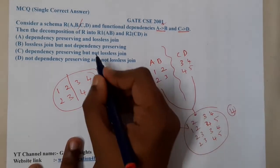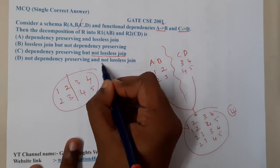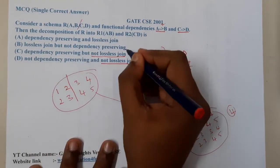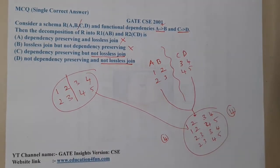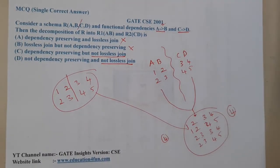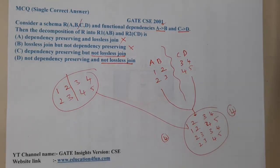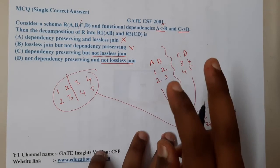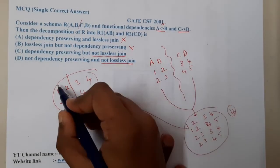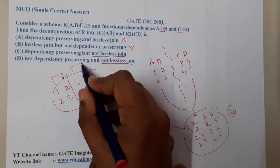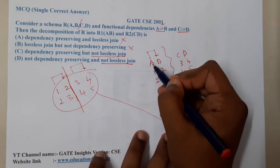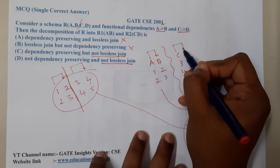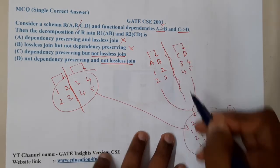So it is not lossless — that option could be correct, and the lossless options are wrong. Now we need to work out whether it is dependency preserving. Observe the question carefully: there are only two functional dependencies — one is A to B and the other is C to D.